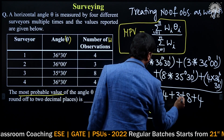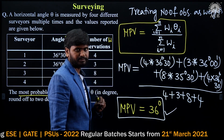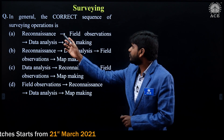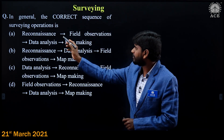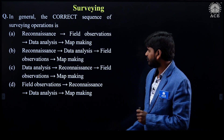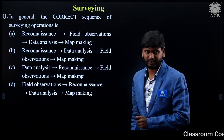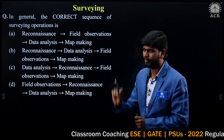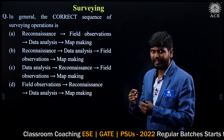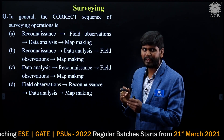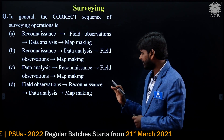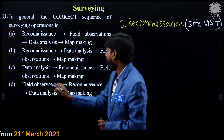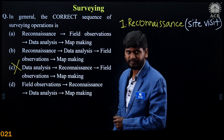36 degrees is the required answer for this question. The next question: in general, the correct sequence of surveying operations is — four sequences are given and we must identify the correct one. Let us answer by the method of elimination. Option C has data analysis at the first position, so we can directly eliminate Option C. Option D is also eliminated because field observations is at the first position.